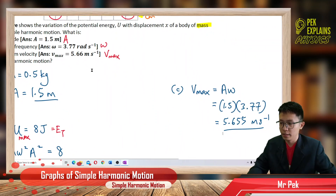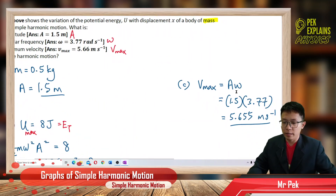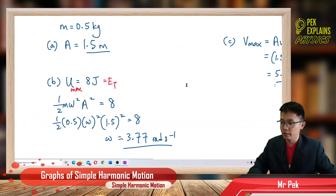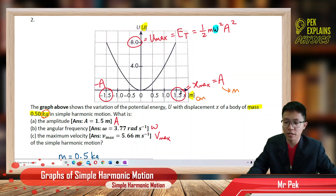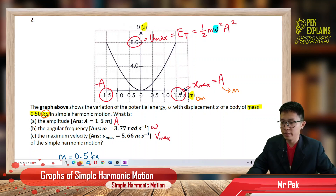The maximum velocity is 5.655 meters per second. To summarize: the key things to check on the graph are the maximum x-value for amplitude, and the maximum potential energy value as the total energy equal to half m omega squared A squared — from there you can find omega and anything else.